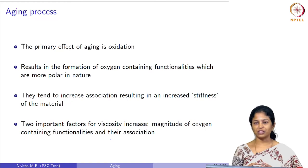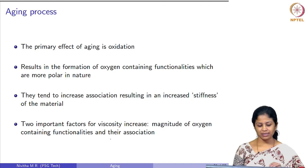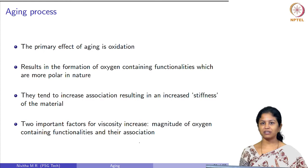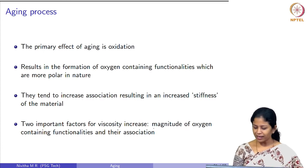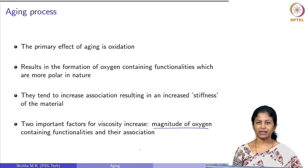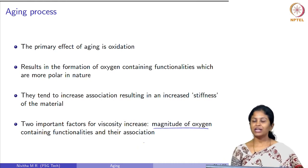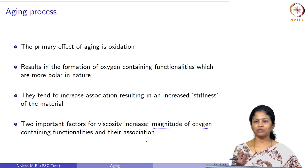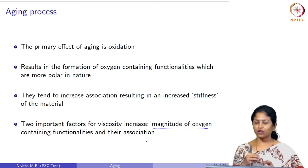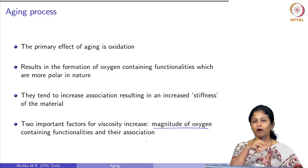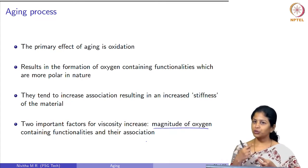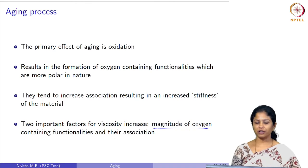Because of this association, the molecules tend to agglomerate and increase the viscosity of the system. There are two important factors responsible for viscosity increase: the first is the magnitude of oxygen-containing functionalities, and the second is association. It is not sufficient to have an increase in carbonyl compounds or formation of oxides — they must also be able to form interaction points and associate the bitumen molecules. Both together lead to an increase in viscosity.